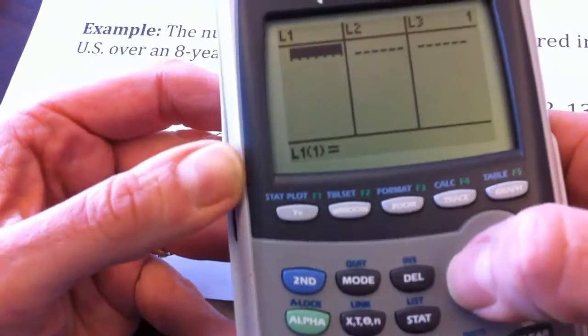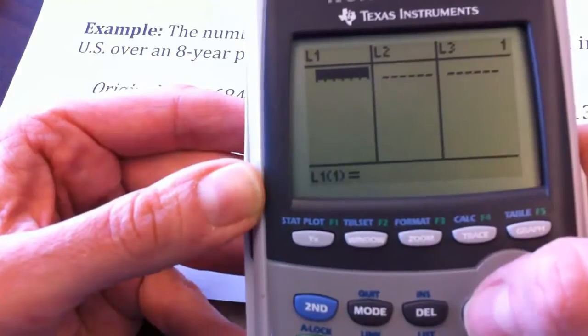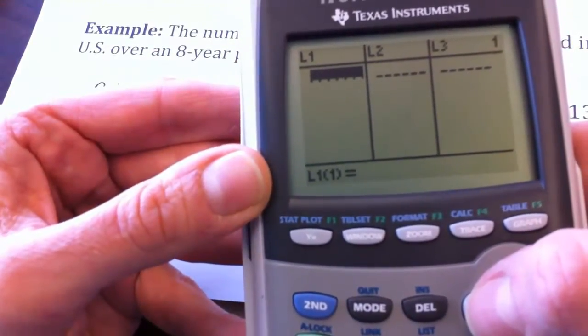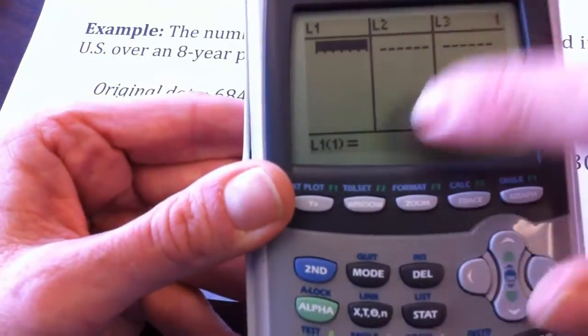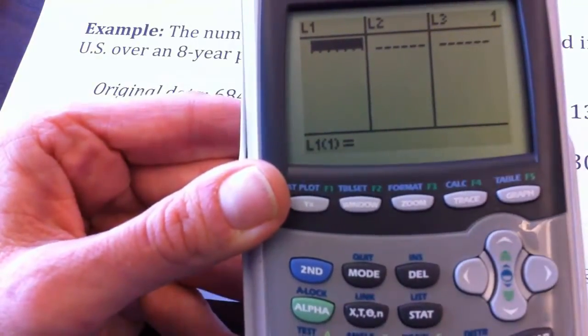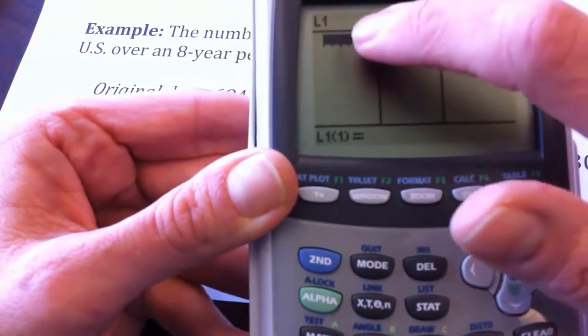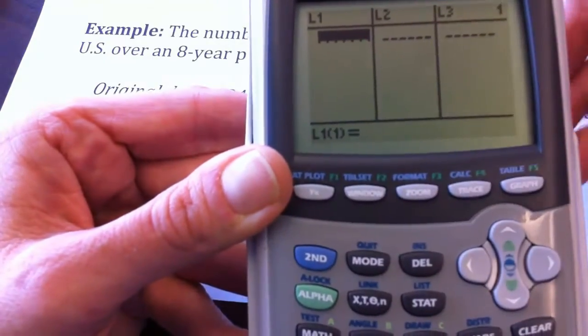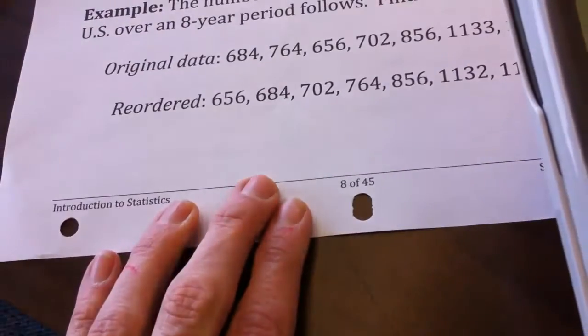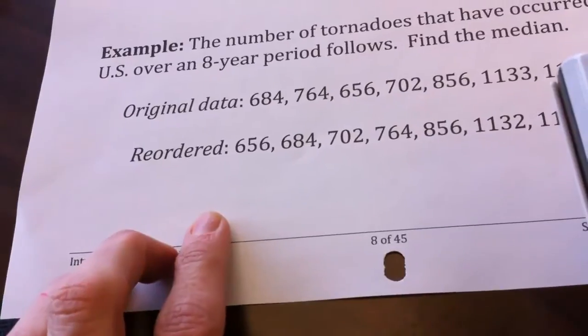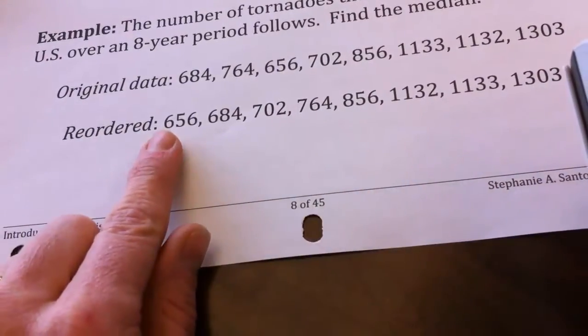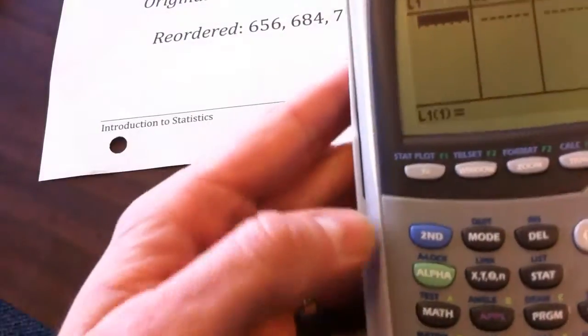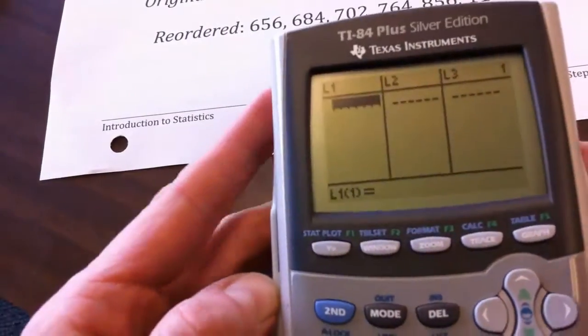If you've messed with this before, you might already have data in there that you can clean out. If not, it'll just all be empty. Each of these columns represents a different variable, so I'm going to take L1 and put the variable for our tornado data. I'm going to enter all of these values into that column.